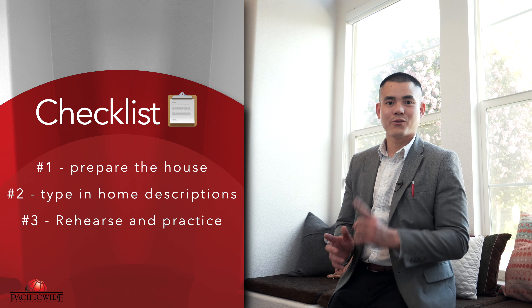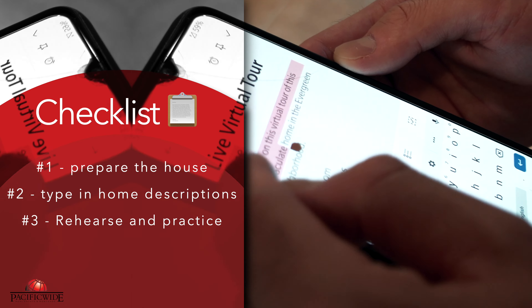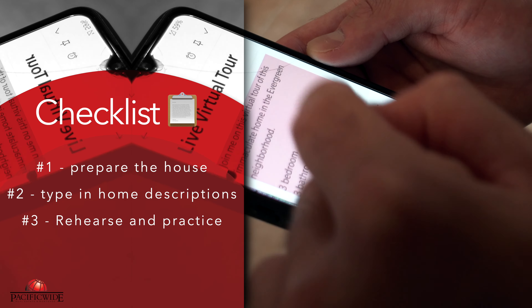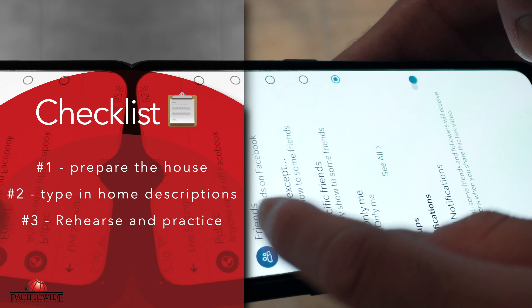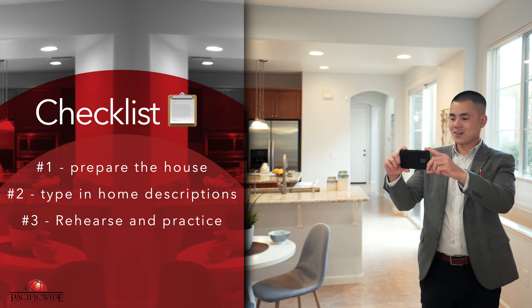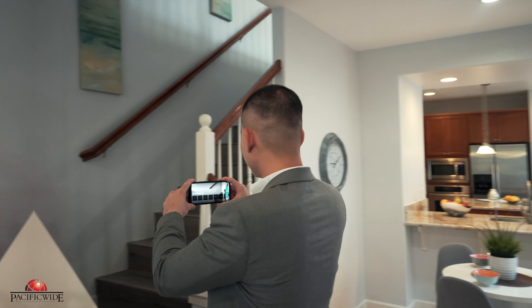Alright, there you have it folks — that's how we do a virtual tour of a home through Facebook Live. Here's a little recap of the checklist. First, make sure all the lights are turned on and the property is clean. Second, write a property description. Third, do a rehearsal — find the angle which will showcase the home — and then you can get started. Stay safe, stay healthy, and I'll see you guys all next time.